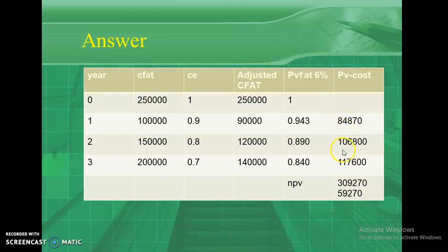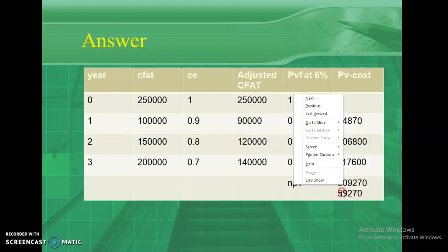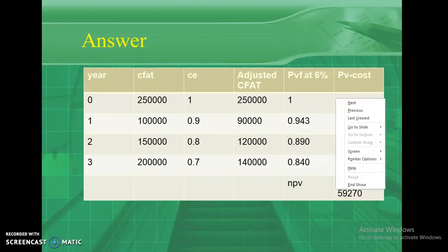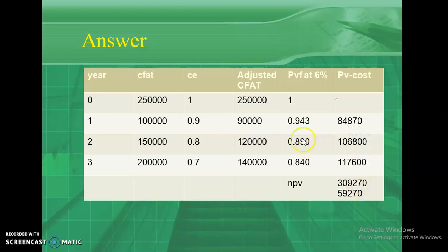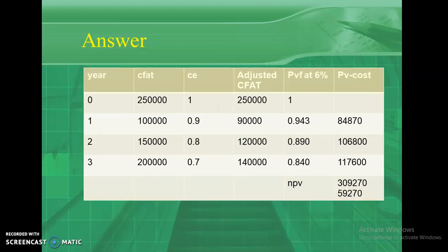The sum of the three present values — 84,870 plus 1,06,800 plus 1,17,600 — gives a total of 3,09,270. The cash outflow is 2,50,000, so NPV equals 3,09,270 minus 2,50,000 equals 59,270. Comparing the two proposals: Proposal Z has NPV of 59,270 and Proposal Y has NPV of 32,210. Definitely, the second proposal with higher NPV is better. This is how you calculate NPV based on the certainty equivalent method.